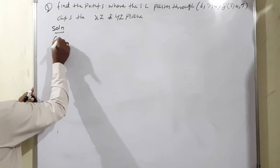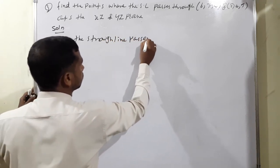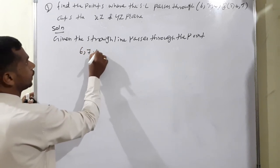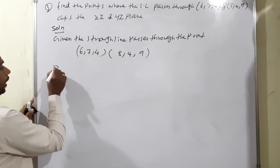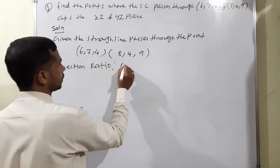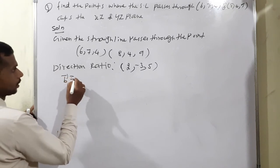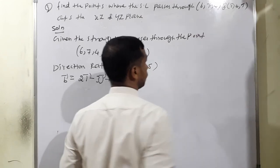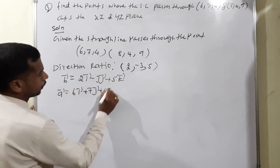Solution. The straight line passes through points (6, 7, 4) and (8, 4, 9). From these two points, the direction ratio is: 8 minus 6 equals 2, 4 minus 7 equals negative 3, 9 minus 4 equals 5. So b vector equals 2i minus 3j plus 5k. Point a vector equals 6i plus 7j plus 4k.